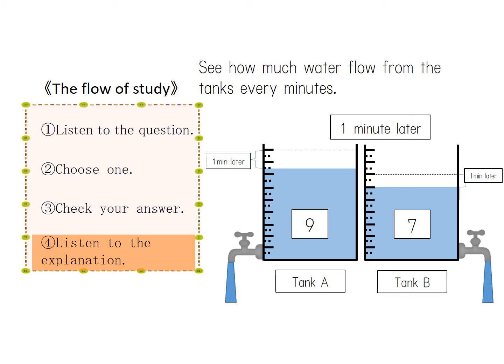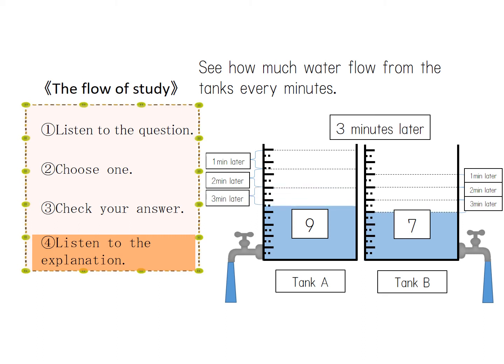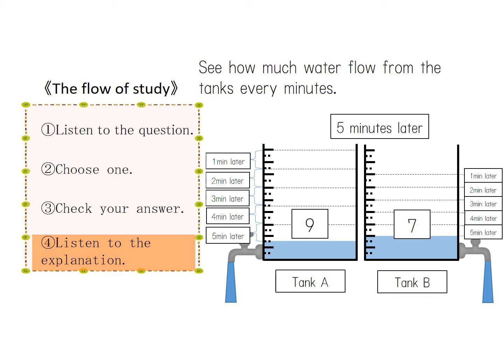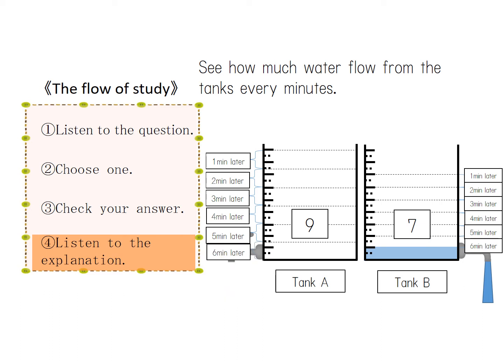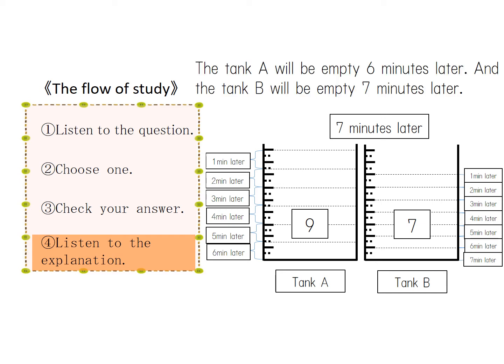1 minute later. 2 minutes later. 3 minutes later. As you can see, 1.5 units of scale of water are flushed from tank A and 1 unit of water is flushed from tank B every minute. Tank A will be empty 6 minutes later and tank B will be empty 7 minutes later.